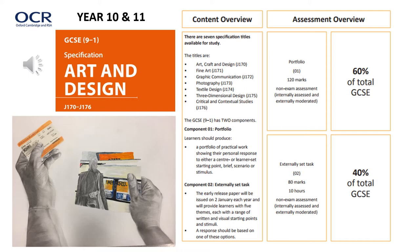For the exam board OCR Art and Design we focus on the fine art element. Within the course students focus on unit 1, which is the portfolio worth 60% of the total GCSE. They will produce a folder and a final piece on the twisting and turning theme set in school. Additionally they will do the externally set task where the exam board send a paper with a list of themes for students to pick from, and they will produce another folder and final piece. That final piece will be done in a 10 hour exam across two days, and is worth 40%.